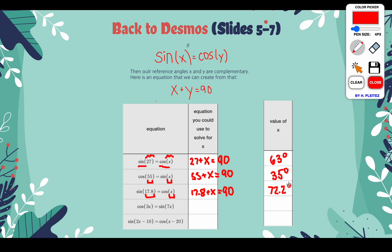Now here's where it gets a little more complex because now we have variables in both. But if you understand this relationship, you're going to be fine. Cosine and sine are equal, and this is only true if the reference angles add to 90 — they must be complementary. So we can take 3X plus 7X, set it equal to 90, and find the value of X. Solving that algebra gives you X equals 9.